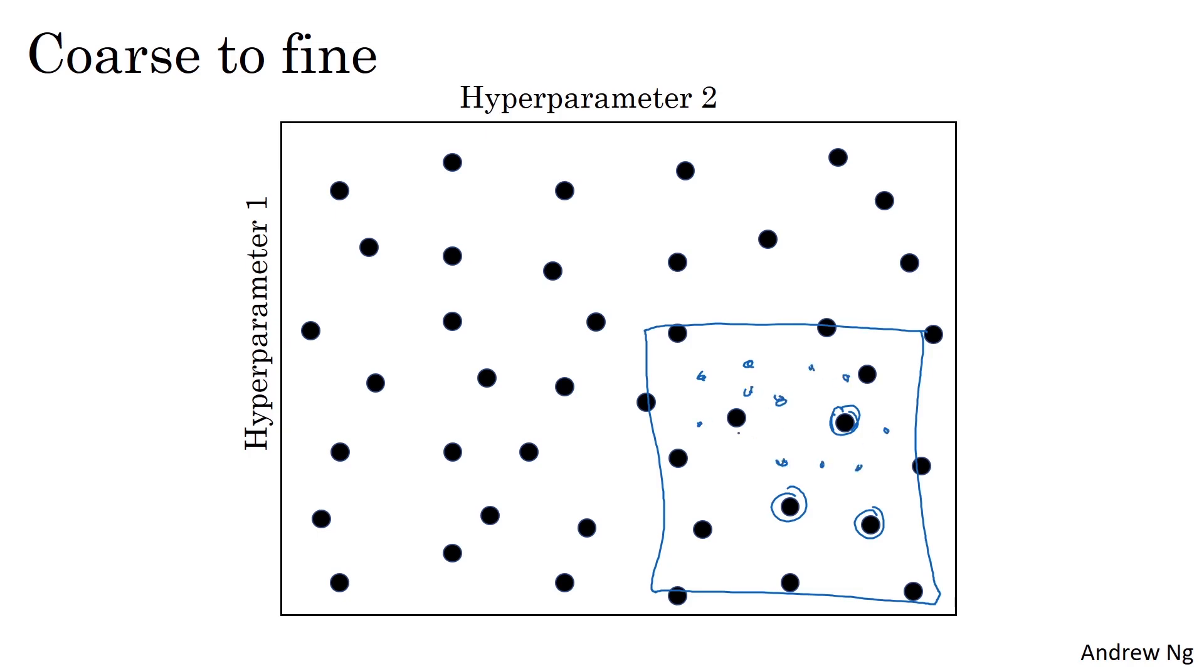Maybe again at random, but to then focus more resources on searching within this blue square if you're suspecting that the best setting of the hyperparameters may be in this region. So after doing a coarse sample of this entire square, if that tells you to then focus on a smaller square, you can then sample more densely in this smaller square. So this type of a coarse to fine search is also frequently used.